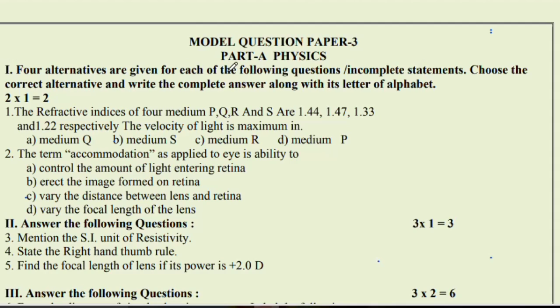So here Part A, Part B, Part C is there. First part, Part A, Physics. Four alternatives are given for each of the following questions or incomplete statements. Choose the correct alternative and write the complete answer along with its letter of alphabet.